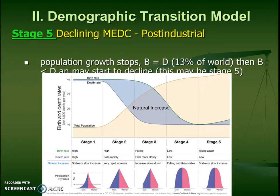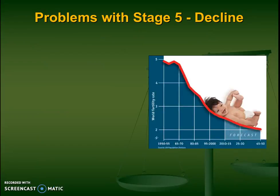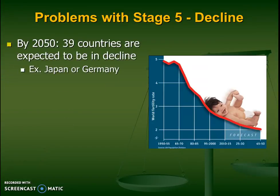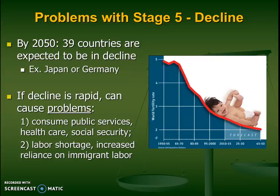In stage five, we're looking at a declining MEDC — places like Germany and Japan — where they might have such an old population that they start to have a declining number of babies being born, and this could be worrisome. The worry there is that if there aren't enough young skilled workers, how are they going to take care of the old? How will they fill jobs, handle healthcare, or avoid running out of money for Social Security? This isn't as big a problem if immigrants keep coming in, but Japan doesn't have a strong immigration policy, whereas the US really depends on immigrants — otherwise we would also be stage five.